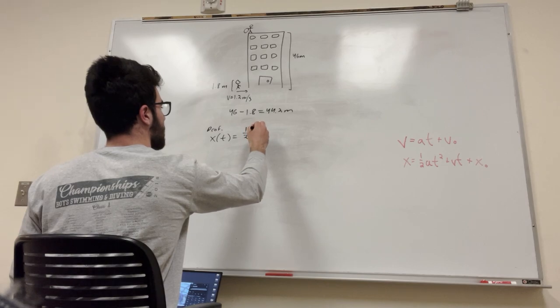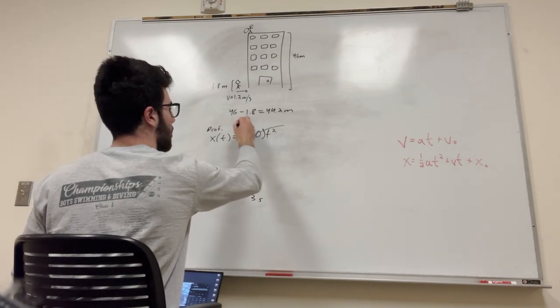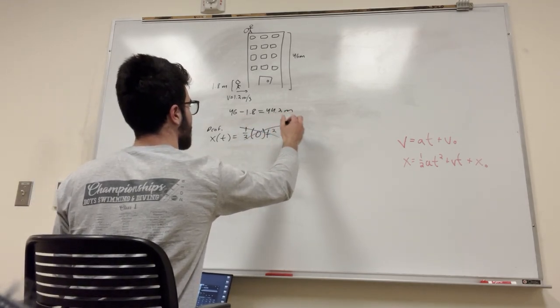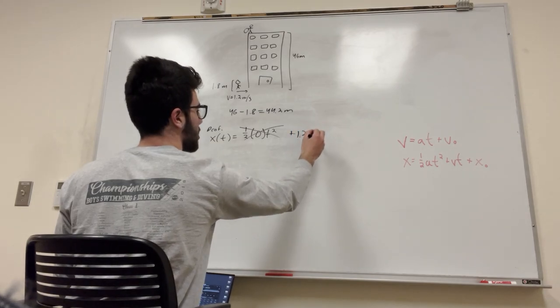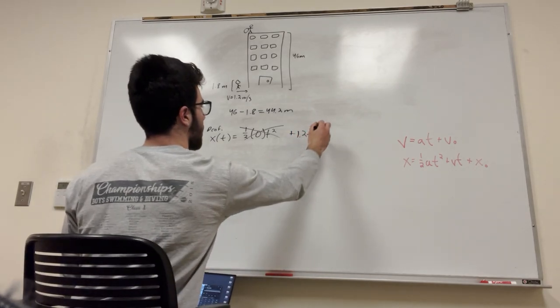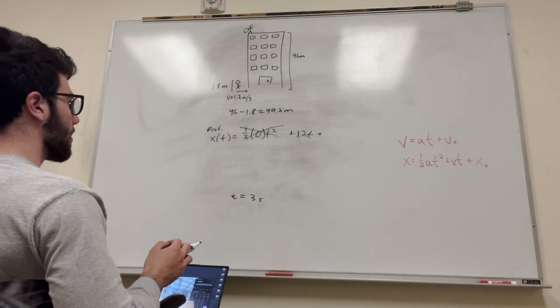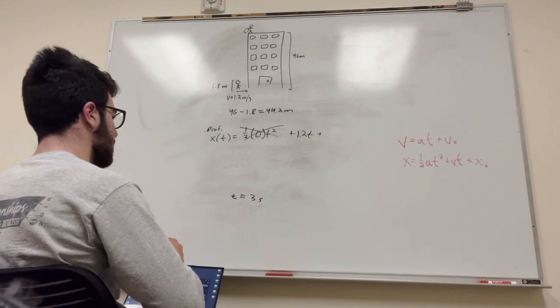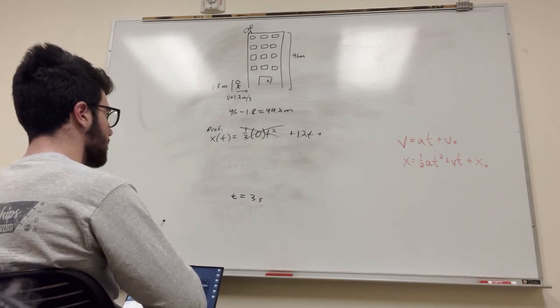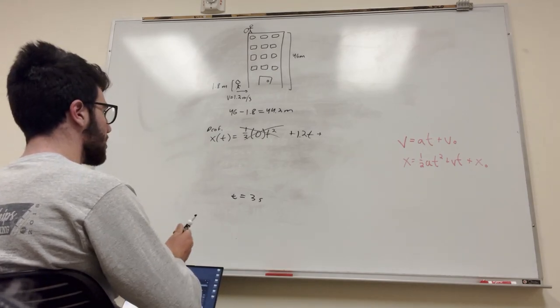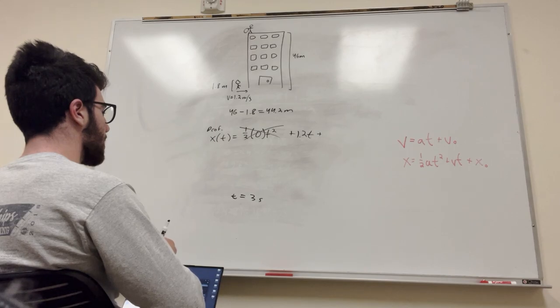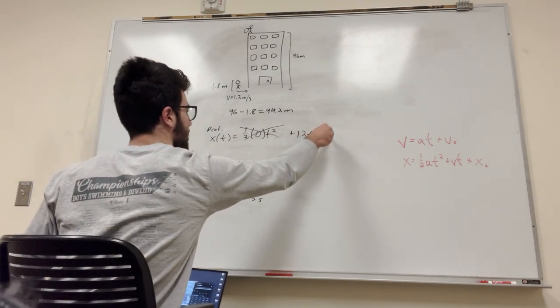1/2 acceleration, 0. Don't worry about that. Plus velocity, so 1.2 t, plus initial position, which is a thing we want to know, don't we? Let's say his initial position is 0, right? Anyway, what do we want to know here? Yeah, I guess we do want to know what his initial position is, 0.